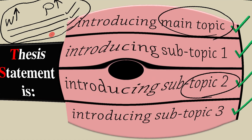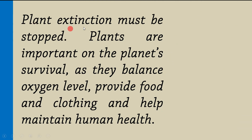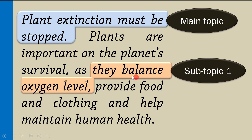Let's look at some examples. Research question: how can plant extinction affect human life considering Amazon rainforest destruction? The thesis statement could be: 'Plant extinction must be stopped. Plants are important to the planet's survival as they balance oxygen levels, provide food and clothing, and help maintain human health.' The main topic is 'plant extinction must be stopped.' The first subtopic is about balancing oxygen levels — when the reader checks your essay they must see that subtopic.